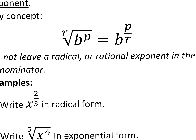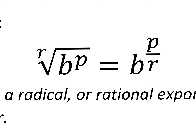Here are the notes. Any root with any base inside — it could be an x, y, z, or even a number — and it could have any power. You can rewrite this radical as a rational exponent, which is an exponent that's really a fraction. The root number goes in the denominator, and the power goes in the numerator.